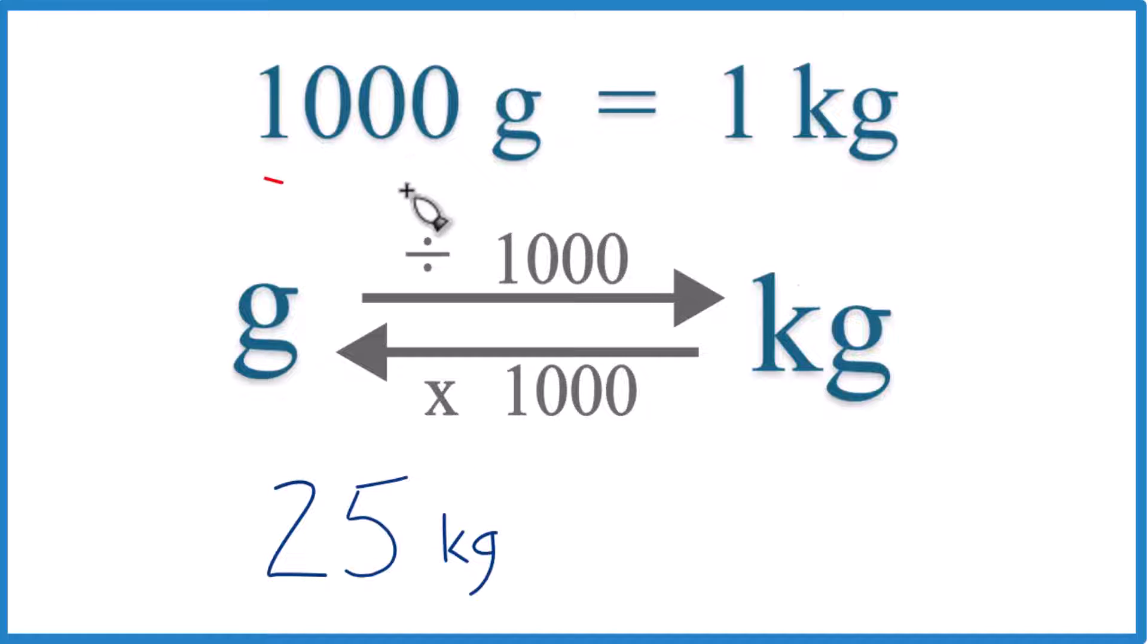So first off, you need to know that there are 1,000 grams in 1 kilogram. We call this a conversion factor. And we need this when we convert from grams to kilograms or kilograms to grams.